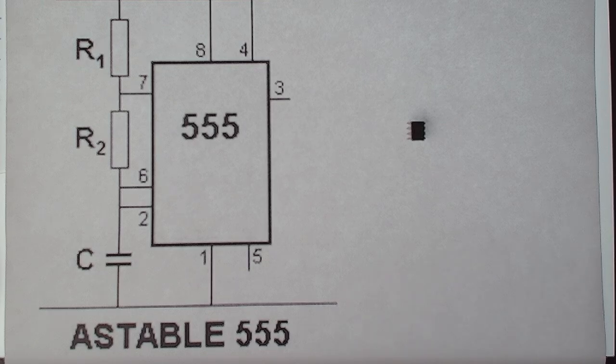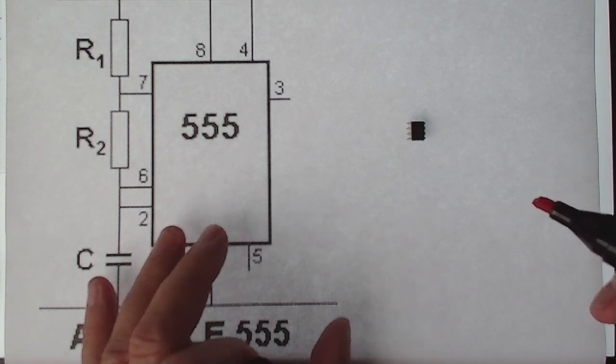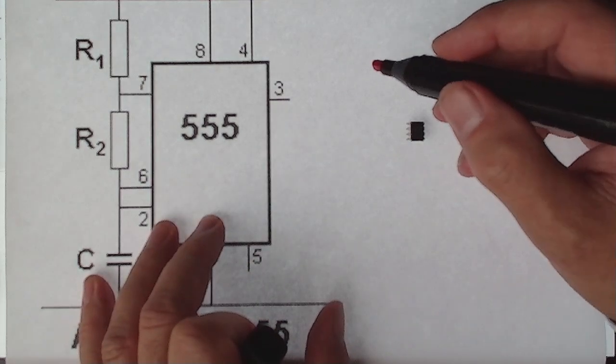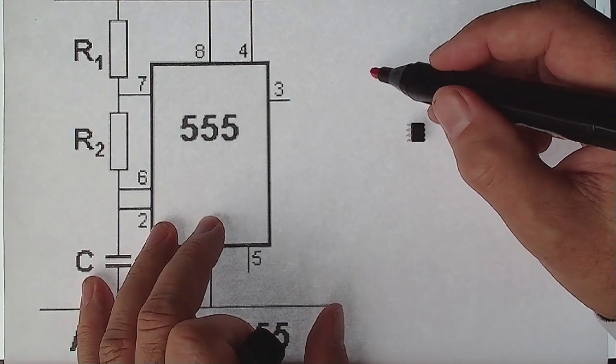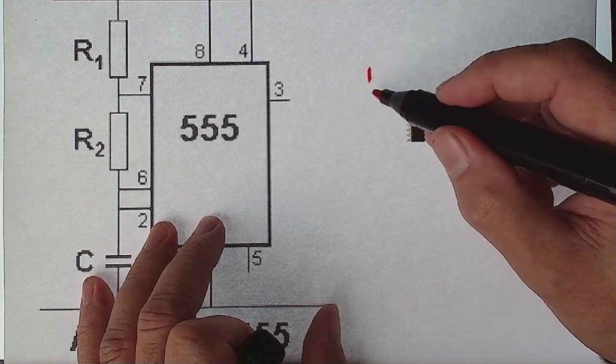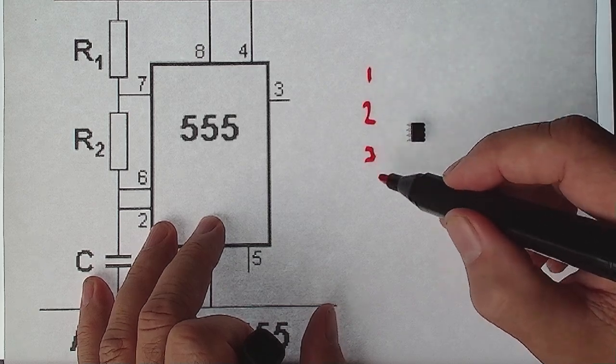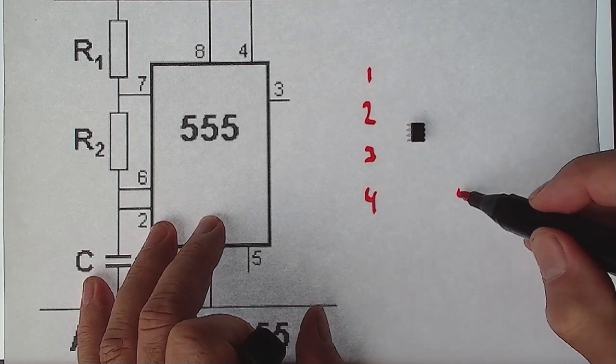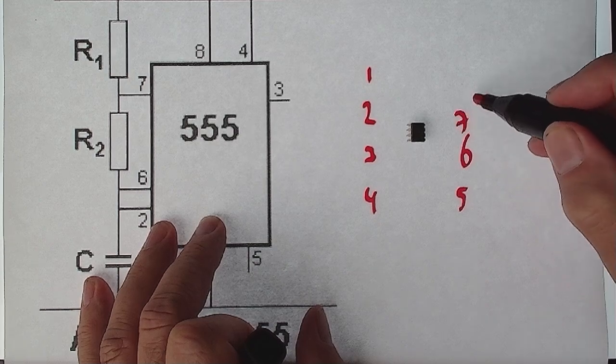The numbering is as follows: left corner upper corner and one two three four five six seven eight.